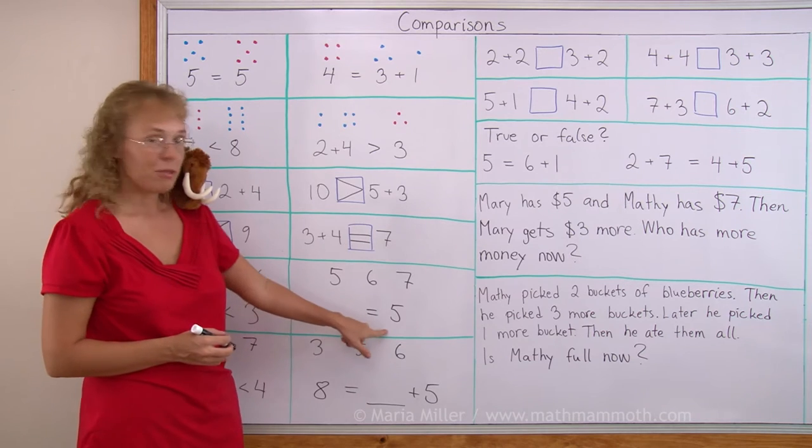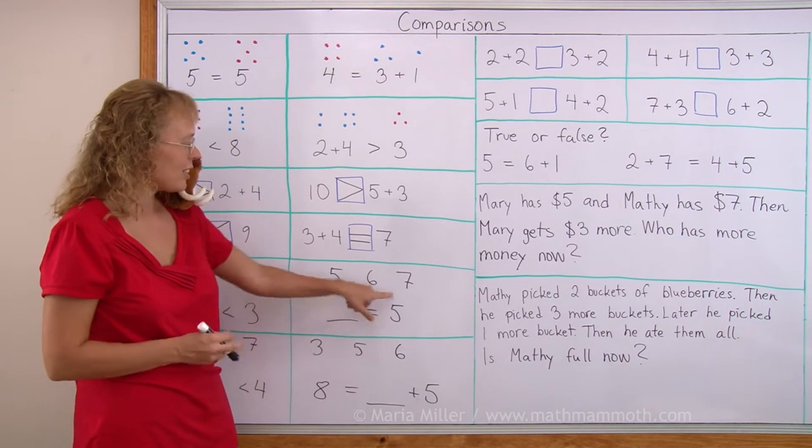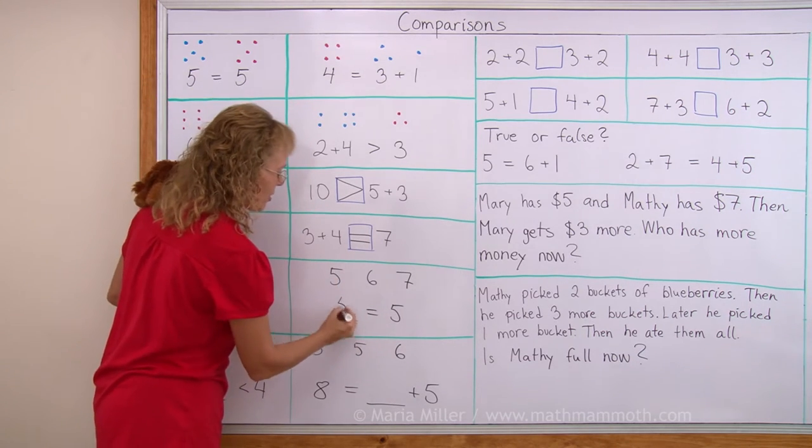How about here? Something is equal to 5. Which number of these is equal to 5? Well, 5 of course. Like that.